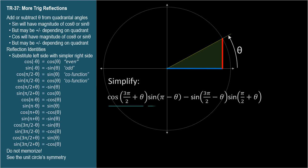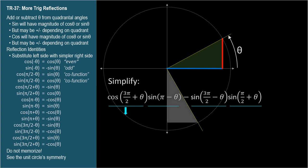We have four trig functions, each with compound arguments, so let's simplify by substitution one at a time. 3 pi over 2 plus theta is down here, and here's its cosine — it's positive and the same as sine theta. So cosine of 3 pi over 2 plus theta can always be simplified to sine theta.